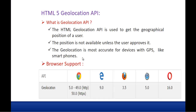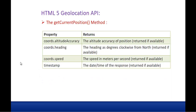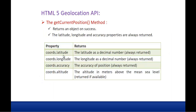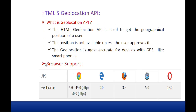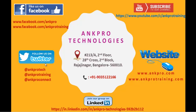In this session we learned how to get the latitude and longitude of the current position, and we explored the coordinates object properties — including latitude, longitude, accuracy, speed, and timestamp. Latitude, longitude, and accuracy are always returned; the rest are optional depending on location availability. Thank you for listening — please subscribe to our YouTube channel, like our Facebook page, and follow us on Twitter.